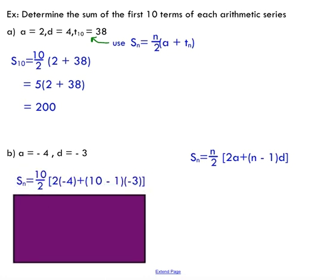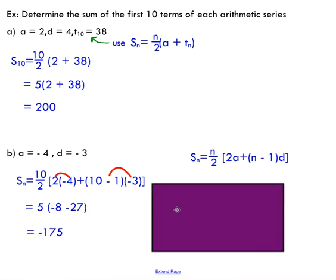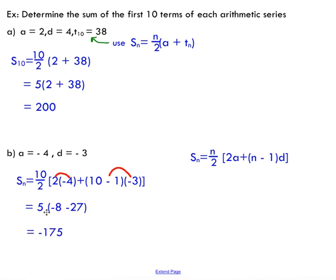We're going to use BEDMAS here. We're going to multiply these two guys together. You might as well subtract here, call that nine, and then multiply by negative three. When we simplify, we're going to see that we have negative eight minus 27, multiplying by five. The sum of the first 10 terms of this series would be negative 175.